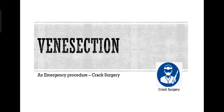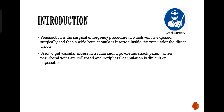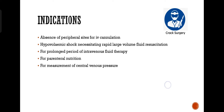Today we are going to discuss Venasection and Emergency Procedure. Venasection is the surgical emergency procedure in which a vein is exposed surgically and then a wide-bore cannula is inserted inside the vein under direct vision. It is used to get vascular access in trauma and hypovolemic shock patients when peripheral veins are collapsed and peripheral cannulation is difficult or impossible.